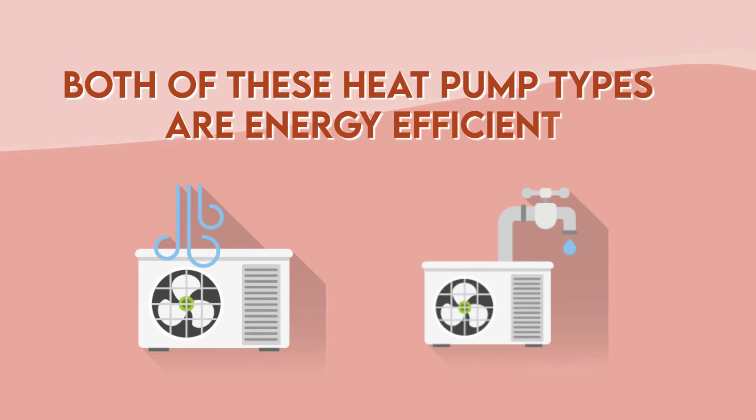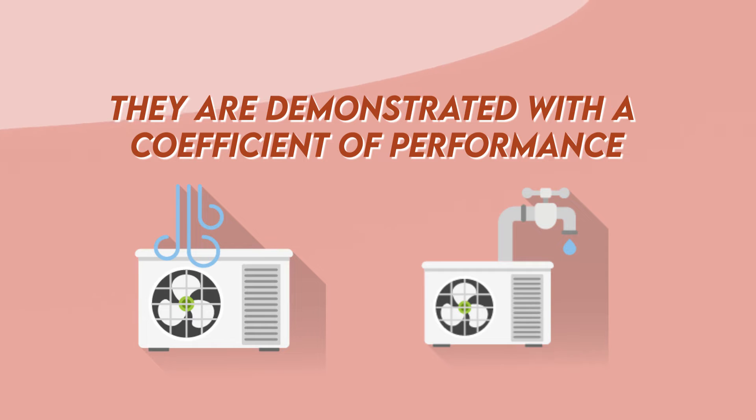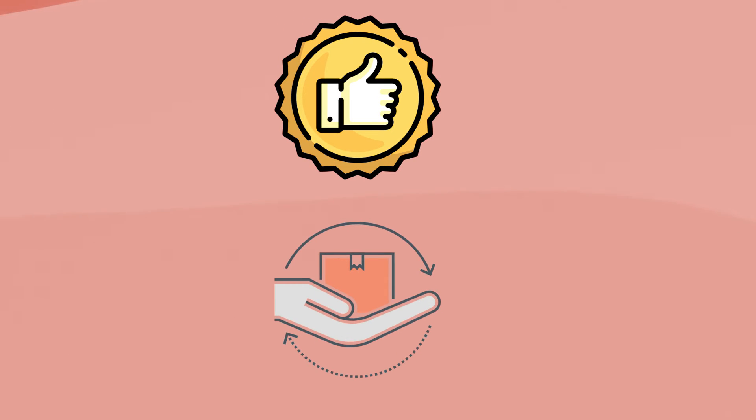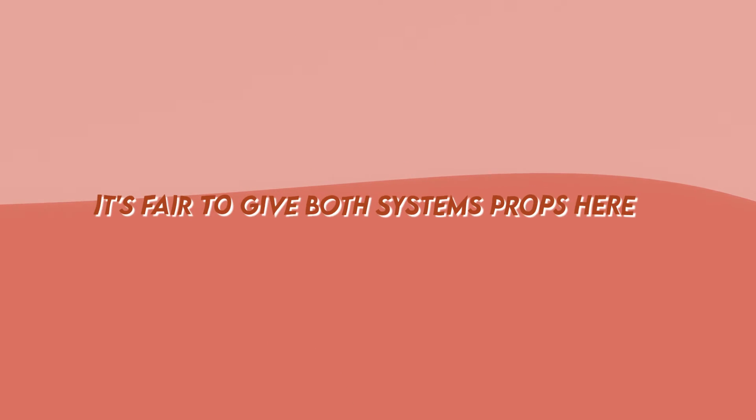Number four: Now we have to mention efficiency. As mentioned earlier, both of these heat pump types are energy efficient. They're demonstrated with a coefficient of performance, also called COP. The higher the COP, the better the performance of the heating system. Efficiency depends mostly on the model of the heat pump system, but all in all, there's not that big of a difference. It's fair to give both systems props here.